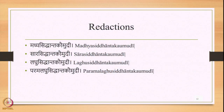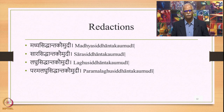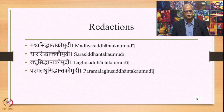There are some redactions also available because it is a huge text. There is the Madhya Siddhanta Kaumudi, which was an abridged version of the Siddhanta Kaumudi. Then there is the Sarasiddhanta Kaumudi, then the Laghusiddhanta Kaumudi — a little bit more abridged — and this was further abridged to the Parama Laghusiddhanta Kaumudi. These are different redactions available of the Vyakarana Siddhanta Kaumudi, all following the same method with a reduced number of Sutras.